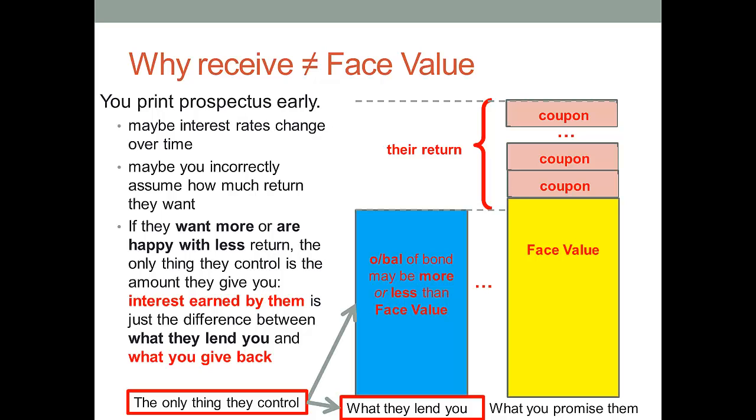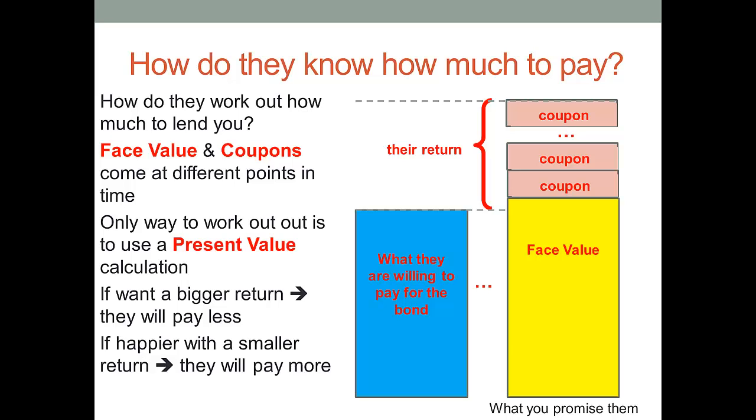Okay, if they want a bigger return, they give you less up front. And see, this is what's going on here. The blue box is the only thing they control. So why might they give you less than face value? Because they want a bigger rate of return that you're promising them implicitly in the coupon. They might give you more. If they're happy with a smaller rate of return, hey, if you're getting a face value, it's 10%. But if you're happy with 8%, somebody else will come along and say, hey, I'll give you more than 100 bucks. So the price will get bid up. So how do they work out that price? How do they work out that opening balance that they're going to lend you?